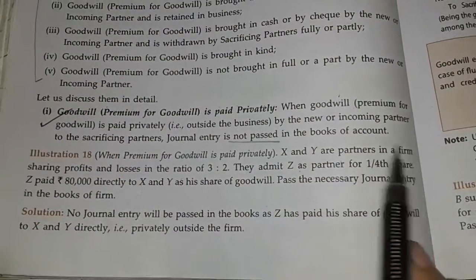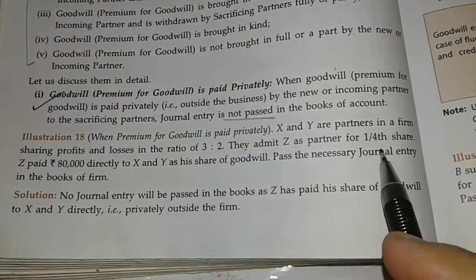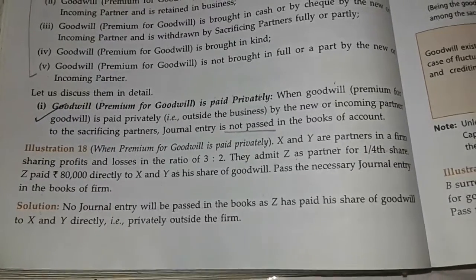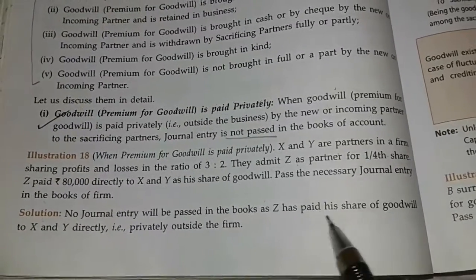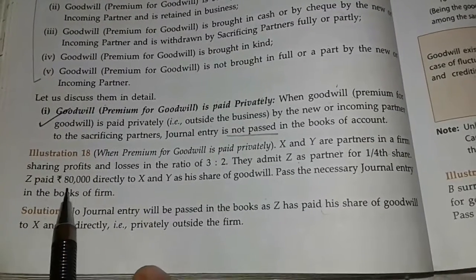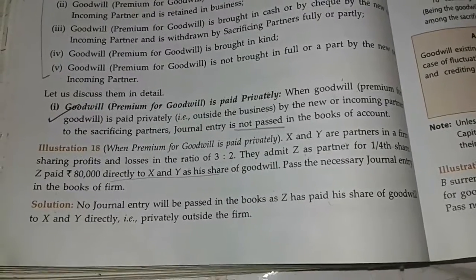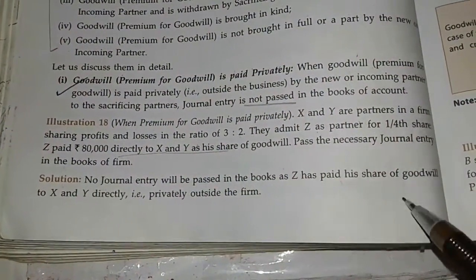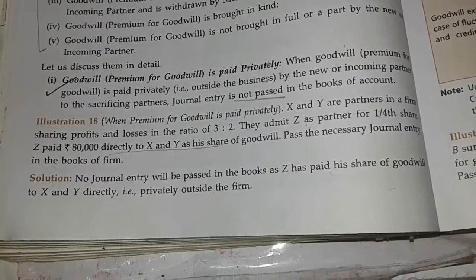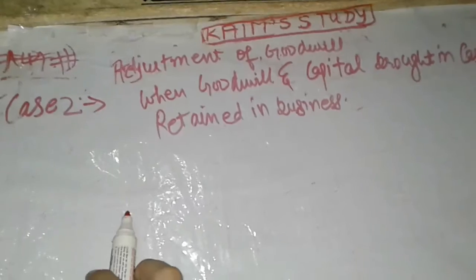For example: X and Y are two partners in a firm sharing profit and loss in the ratio 3:2. They admit Z as a partner for a one-fourth share, and Z pays 80,000 directly to X and Y as his share of goodwill. In this case, it is clearly mentioned that Z paid the amount of goodwill directly to X and Y, outside the business, so no journal entry will be passed.